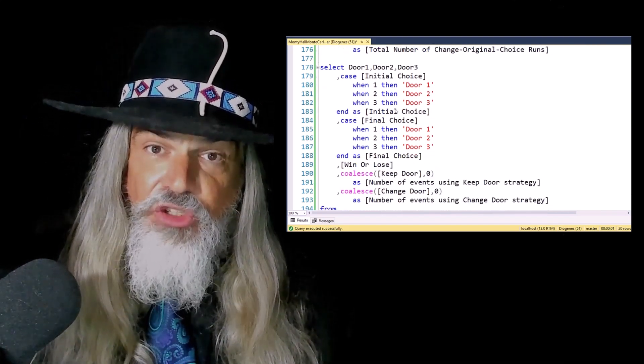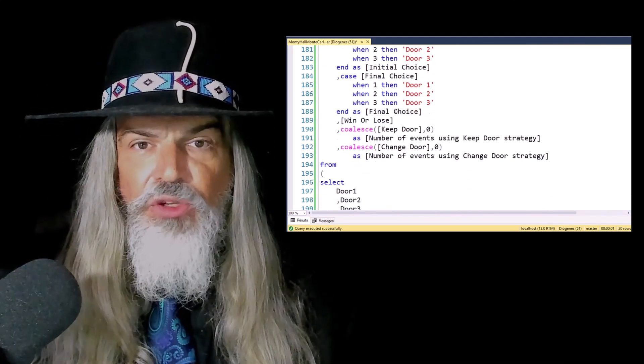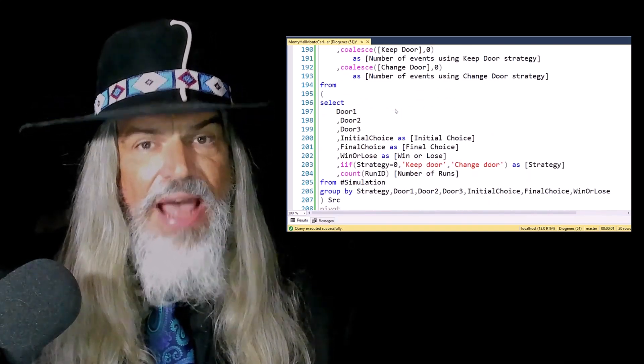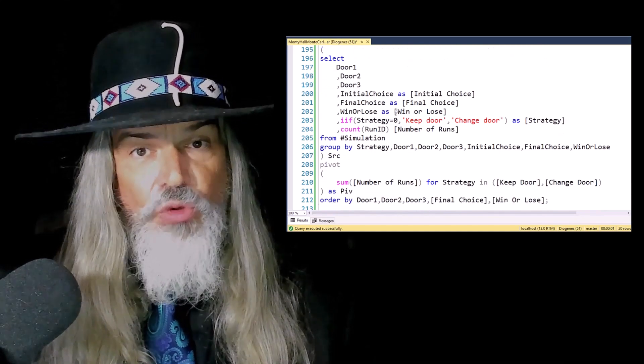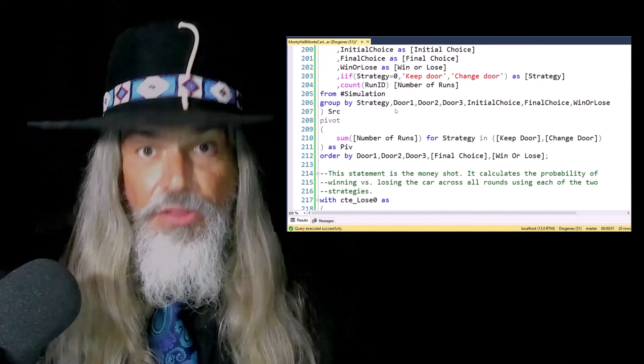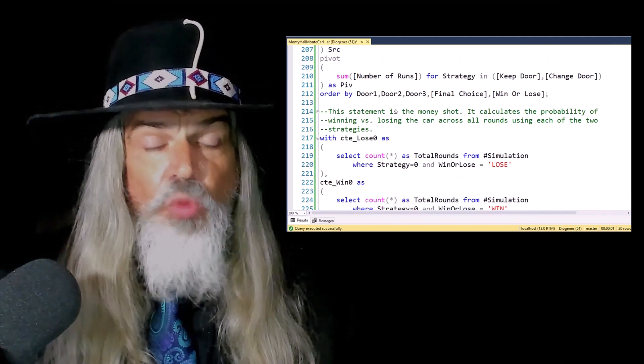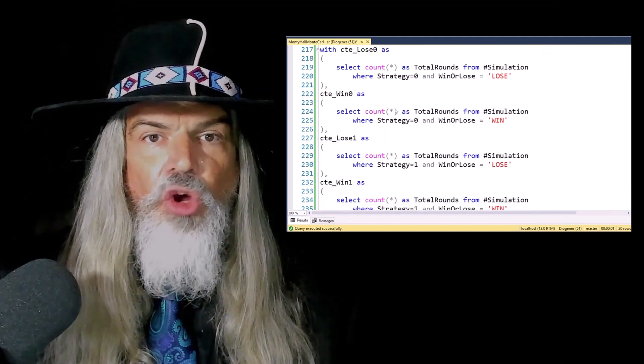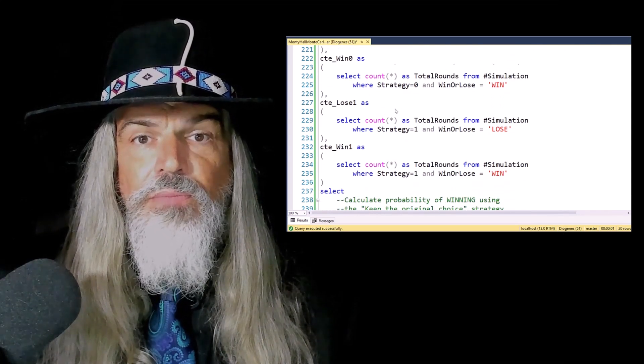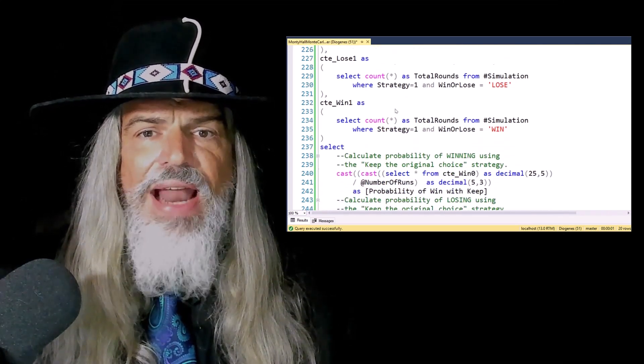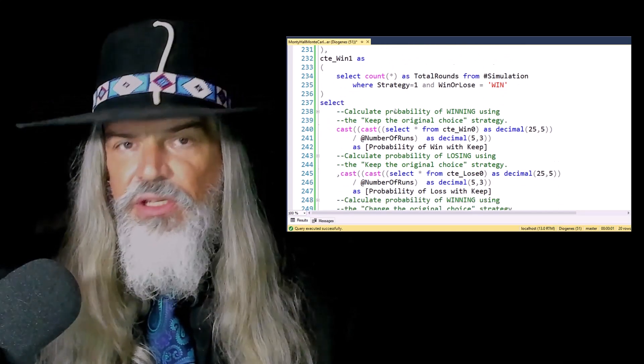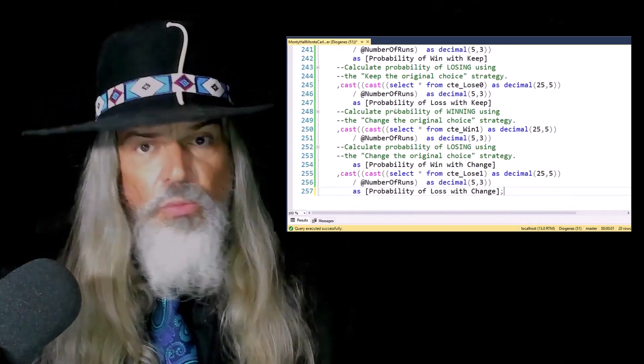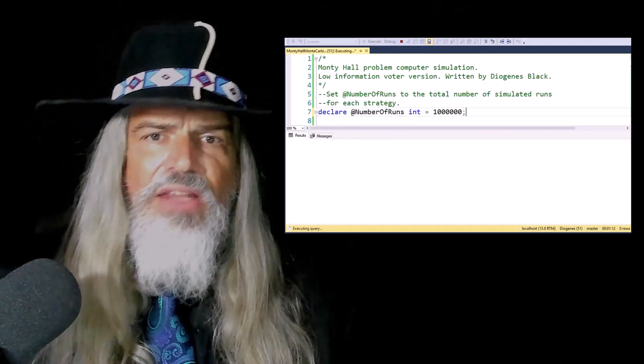We choose one of the three doors either by making one choice and sticking with it after Monty shows us the door with the zonk, or if it's a round where we're going to switch the strategy, we choose the other unopened door. And that's it. That happens a total of two million times. So we can run this and look at the results.